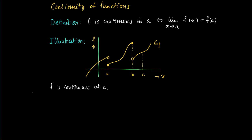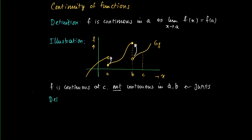Why is f continuous at c? If we approach c from the right and the left hand side, we see that the graph is very nicely moving to the value f(c). Clearly f is not continuous at a and b because we have jumps — we cannot make the values of f close enough to the function value at b by choosing x close enough to b.